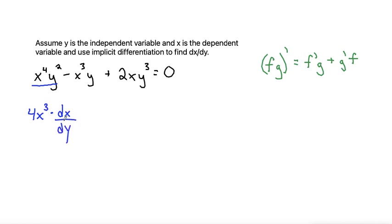That's kind of like X prime, but because we're wanting to find dx/dy, I'll go ahead and write it in this form. So that's just the F prime part. Now let's multiply it times G, which is Y squared.